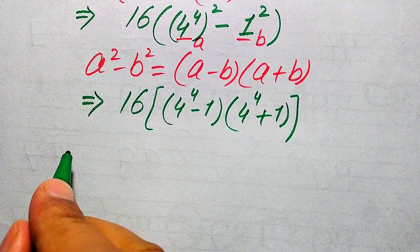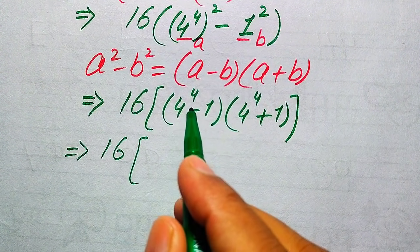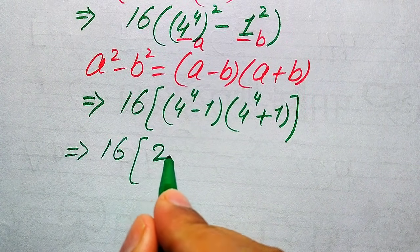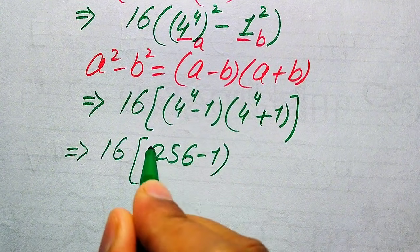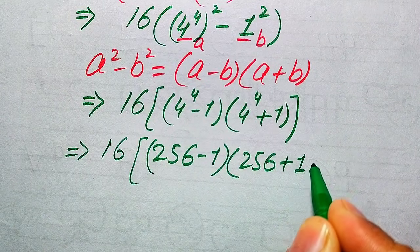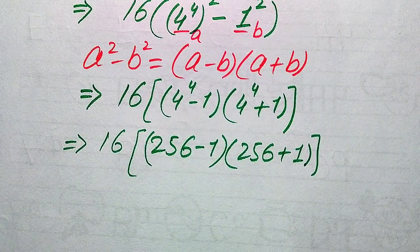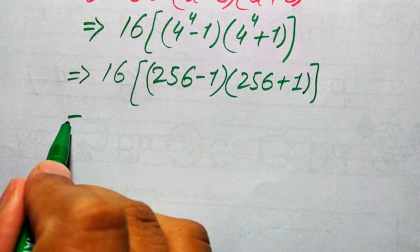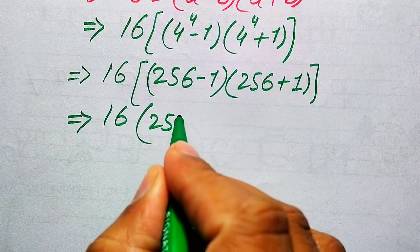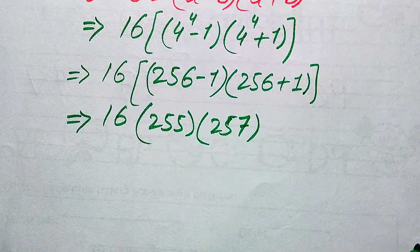In the next step we simplify the terms. We have 4 to the power of 4, and we know that 4 to the power of 4 equals 256. So we get 256 minus 1 times 256 plus 1. Subtracting gives us 255, and adding gives us 257.